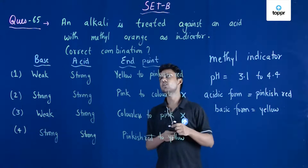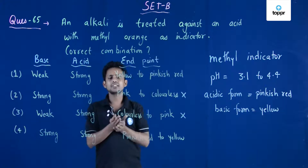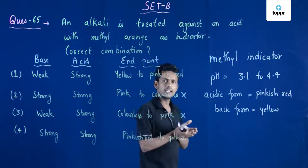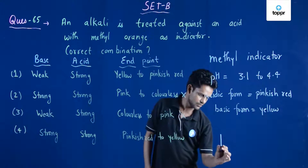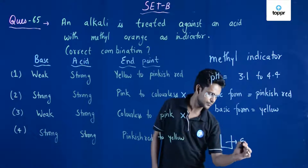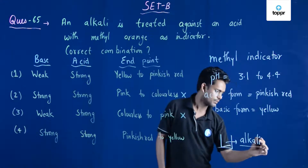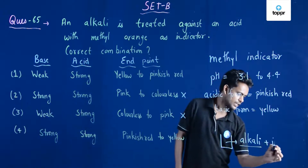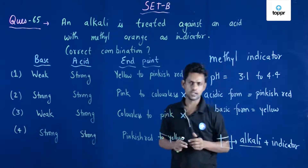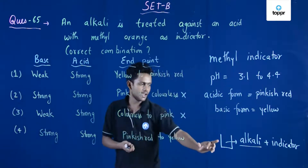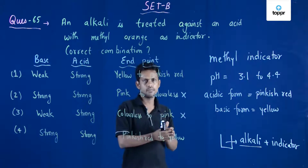Now, they say an alkali is treated against an acid, which means we have the alkali and indicator in the beaker. Since it is in an alkaline, basic medium, it is definitely going to show a yellow color.